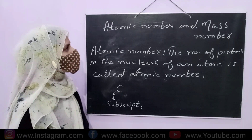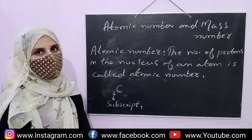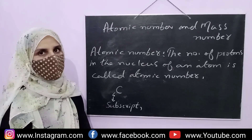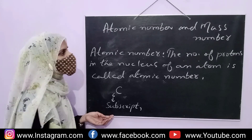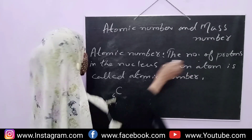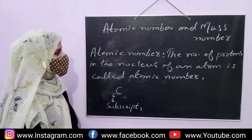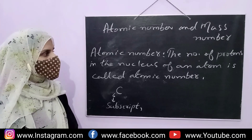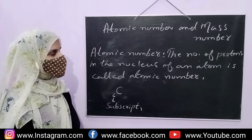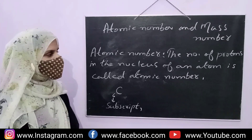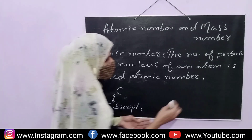Today our topic is atomic number and mass number from chapter 1, Fundamentals of Chemistry. First we will see what is atomic number. The number of protons in the nucleus of an atom is called atomic number. We show the atomic number as Z.